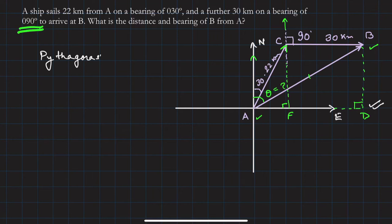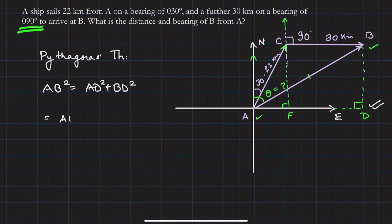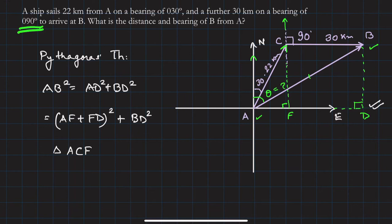By Pythagoras' theorem, AB² = AD² + BD². Now AD can be written as AF + FD, so AB² = (AF + FD)² + BD². Now let us consider triangle ACF, where angle F is 90 degrees.